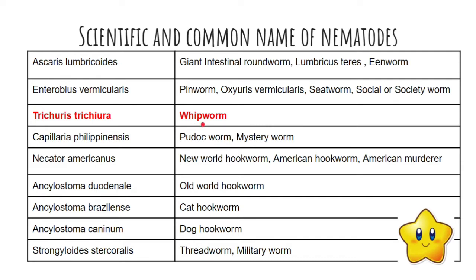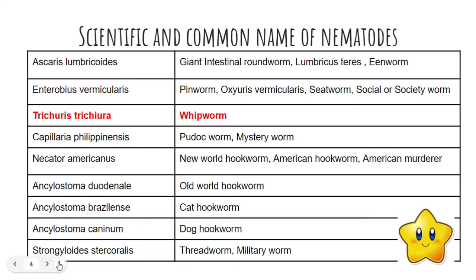The reason for the name whipworm is because the morphology of Trichuris trichiura — the structure of the adults is whip-like. We have also discussed Capillaria philippinensis, also known as the pudoc or the mystery worm. We also discussed our hookworms: Necator americanus, the new world hookworm; Ancylostoma duodenale, the old world hookworm; the two Ancylostoma species which are the cat and dog hookworms; and also Strongyloides stercoralis, which is the threadworm and the military worm.